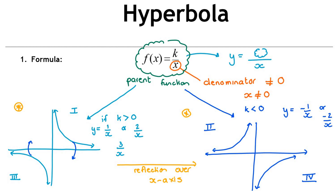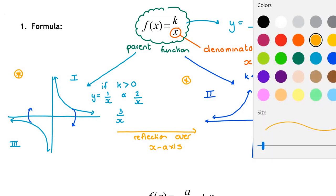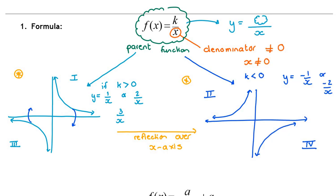As long as you remember the original shape, it's useful to remember which quadrants apply when the value is positive versus negative. Those are your basic shapes of the hyperbola. Do you notice that the hyperbola has two important lines? These are called asymptotes.